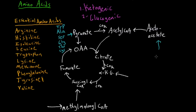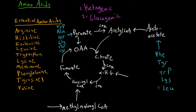Looking at the more ketogenic side, the amino acids broken down into acetoacetate and acetyl-CoA are: phenylalanine, tyrosine, tryptophan as mentioned, lysine, and leucine as well.